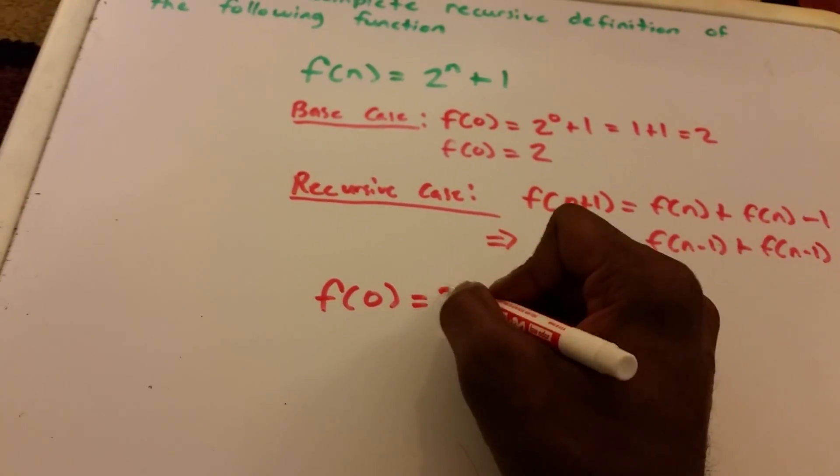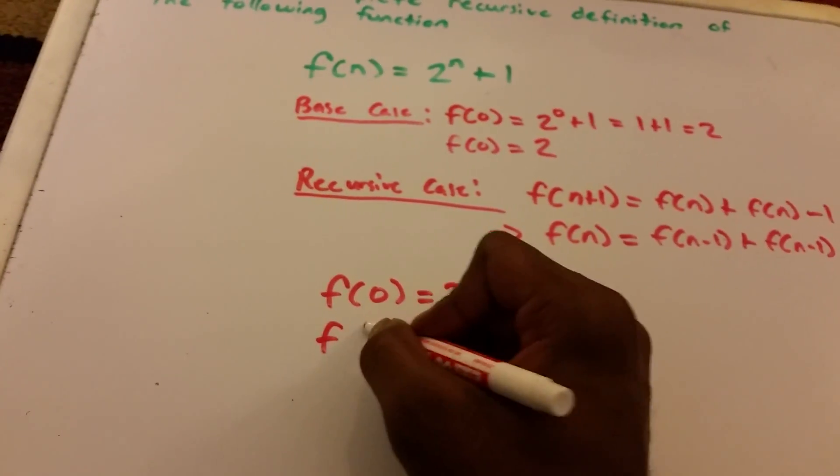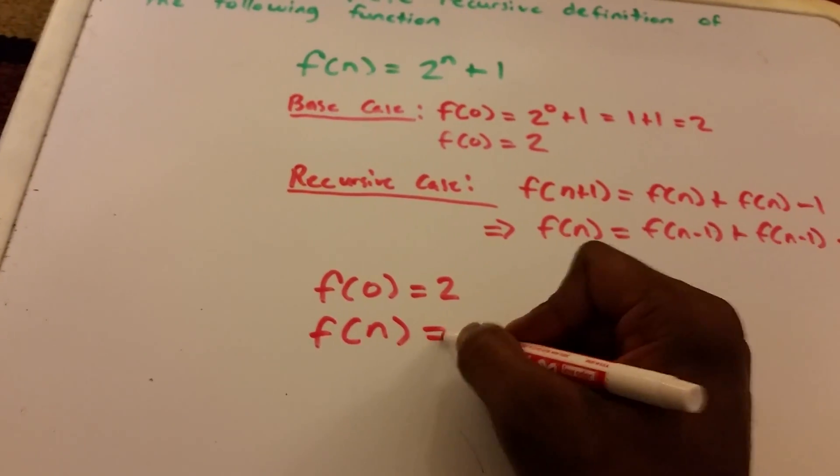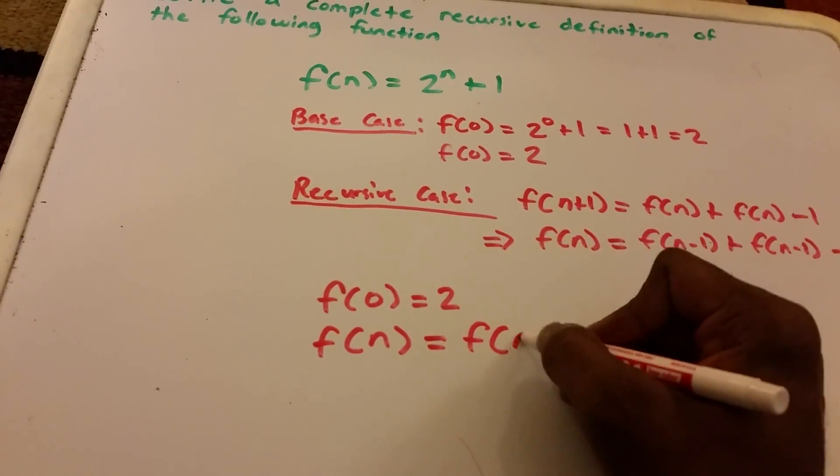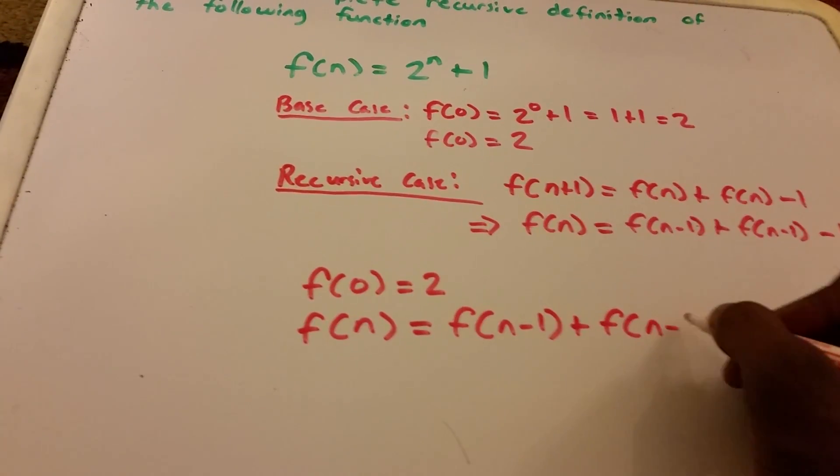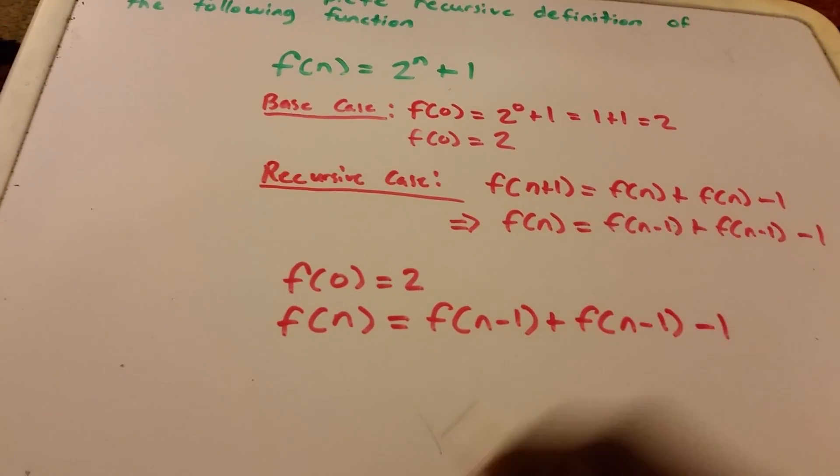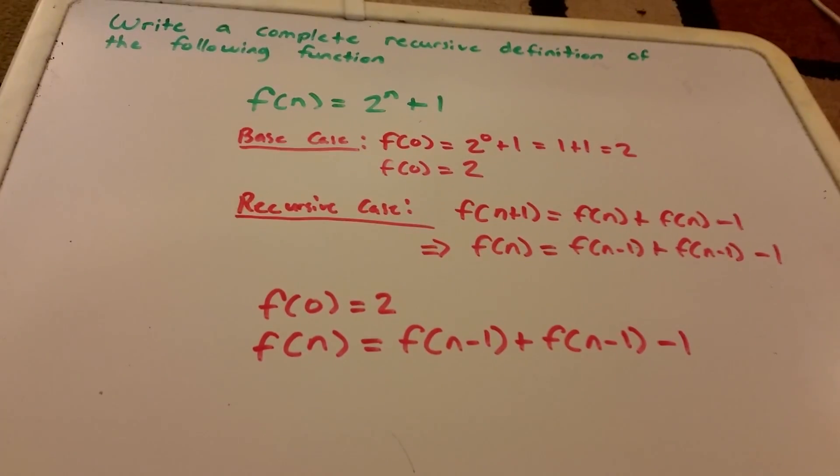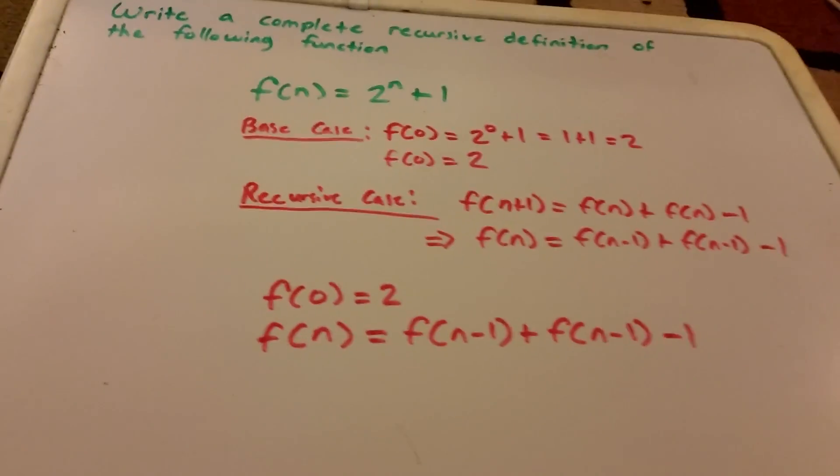And so our final answer is f(0) = 2 and f(n) = f(n-1) + f(n-1). Alright, and that's the answer.